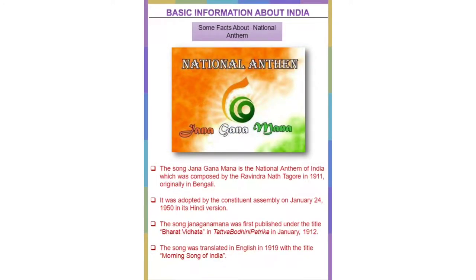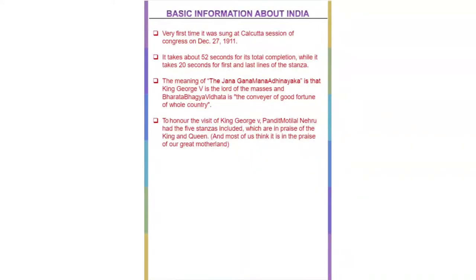Some facts about the national anthem: Jana Gana Mana was composed by Rabindranath Tagore in 1911, originally in Bengali. It was adopted by the Constituent Assembly on January 24, 1950 in its Hindi version. It was first published under the title Bharat Vidhata in Tattva Bodhini Patrika in January 1912, and translated into English in 1919 with the title Morning Song of India. It was first sung at the Calcutta Session of Congress on December 27, 1911. It takes about 52 seconds for full completion and 20 seconds for just the first and last lines. The phrase Jana Gana Mana Adhinayaka refers to King George V as lord of the masses, and Bharat Bhagya Vidhata as the conveyor of good fortune of the whole country.